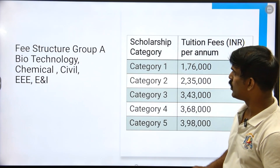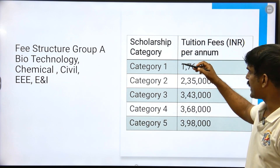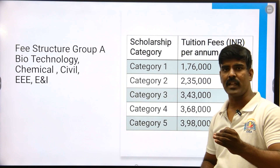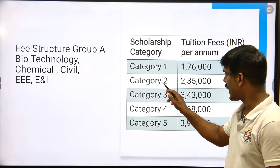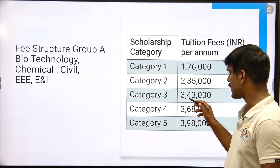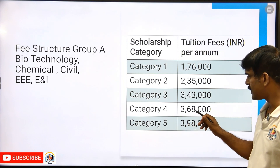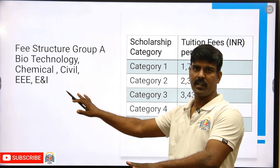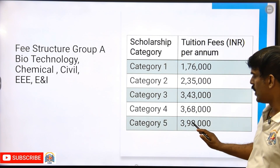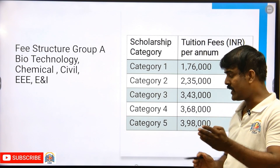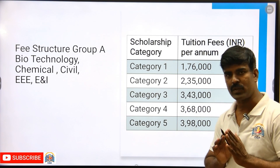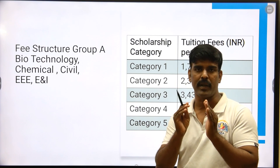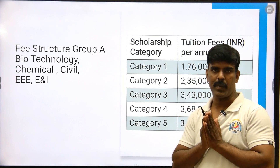For Group B — Biotechnology, Chemical, Civil — there are categories 1 through 5. Category-wise fee structure: Category 1 is 1,76,000. Category 2 is 2,35,000. Category 3 is 3,43,000. Category 4 is 3,68,000. Category 5 is 3,98,000. This is the respective category fee for these departments. If you select category 4, you have 4,95,000. For one of the five selected categories, it will be 2,86,000. Overall for six fours, that is 24 lakhs, so if you spend 24 lakhs, you can include hostel fees.